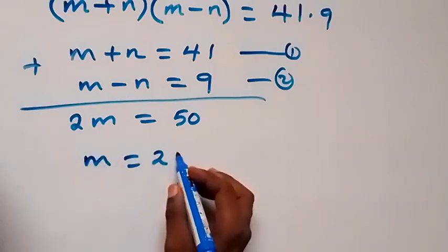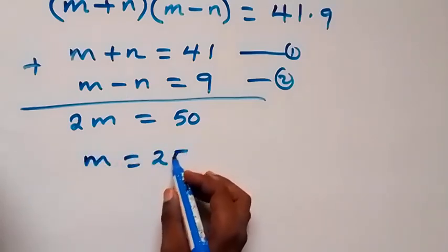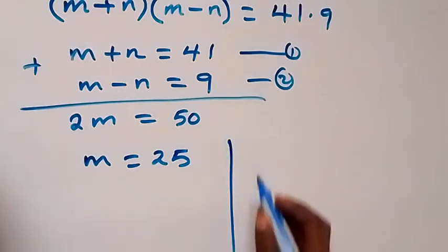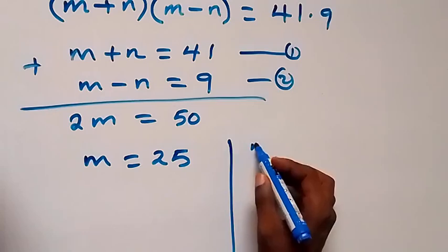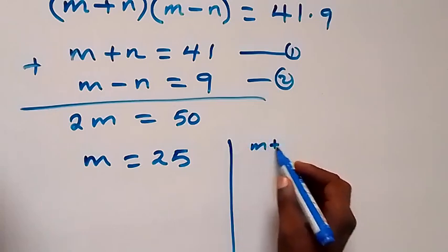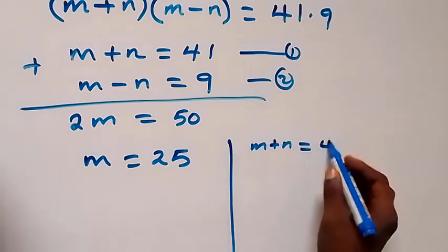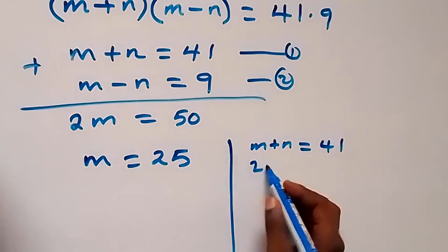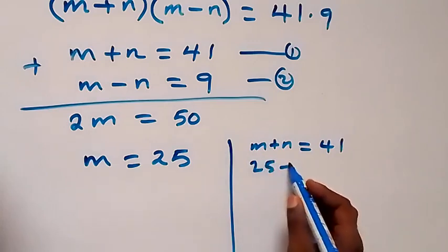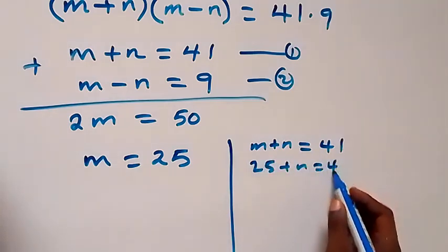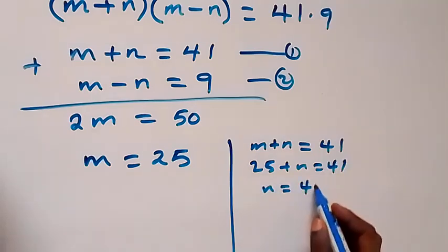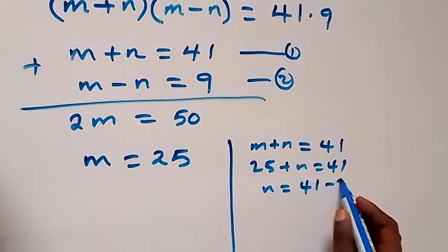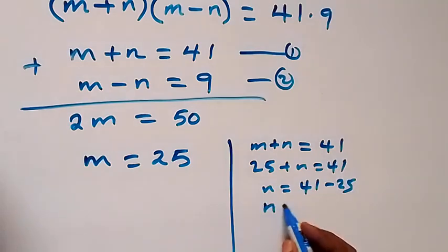To get n, we use the first equation: m plus n equals 41. Substituting m equals 25, we have 25 plus n equals 41, so n equals 41 minus 25, giving us n equals 16.